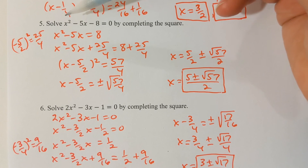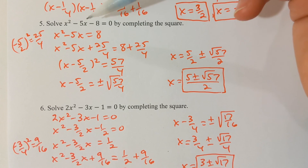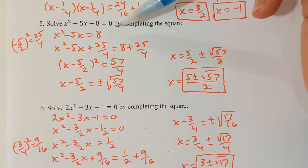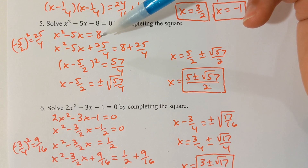I've already got a 1 in front of x². The next thing would be to bring the constant over to the right — add 8 to both sides. Now I'm all set up to complete the square.